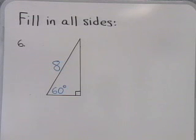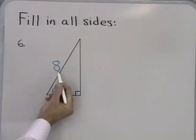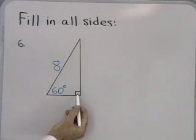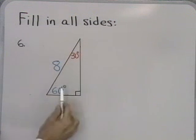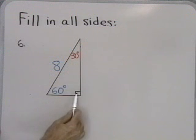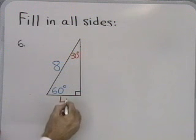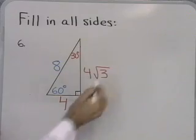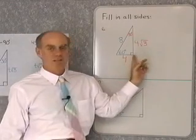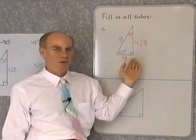For the next two problems, fill in all sides. Problem number 6: I have a triangle where the longest side is labeled 8 and one angle is 60 degrees, making this a 30-60-90 triangle. The longest side is 8, so the shortest side is half that — 4 — and the third side is 4√3. Once you know you have a 30-60-90 triangle and any one side, you can easily find the other two.